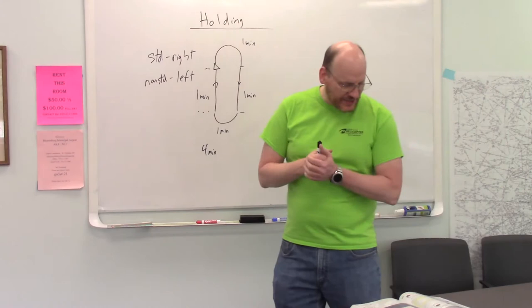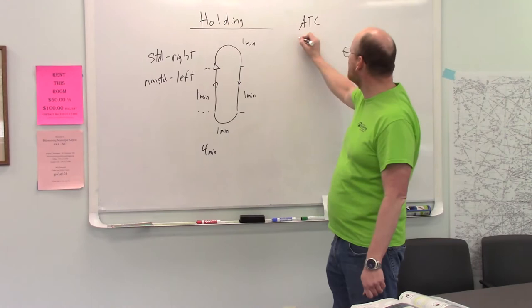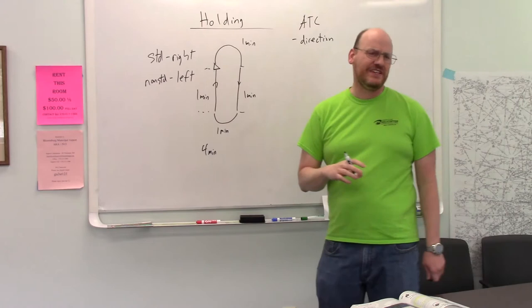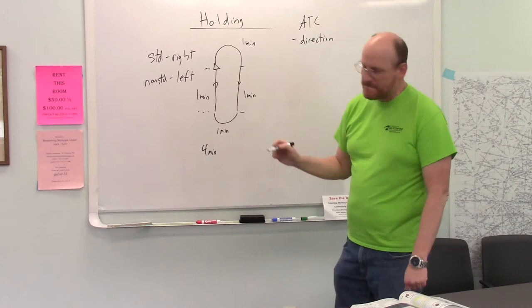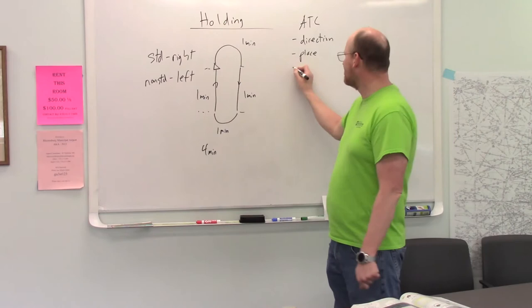Now, when you're given a holding pattern, they will tell you things like the direction. So, this is what ATC is going to tell you. The direction, and this will be a cardinal direction, north, south, east, west, or northeast, etc. A place, some sort of a fix to hold. A radial or a bearing.